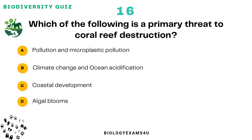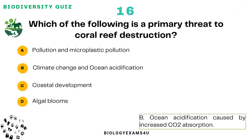Question number 16: Which of the following is a primary threat to coral reef destruction? Option A: Pollution and microplastic pollution. Option B: Climate change and ocean acidification. Option C: Coastal development. Option D: Algal blooms. The correct answer is: ocean acidification caused by increased carbon dioxide absorption and climate change.